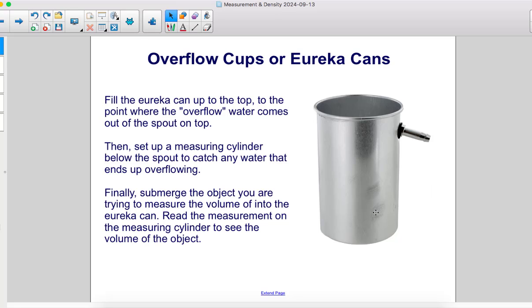Fill the Eureka can up to the top, to the point where the overflow water comes out of the spout on the top. Then set up a measuring cylinder below the spout to catch any water that ends up overflowing.